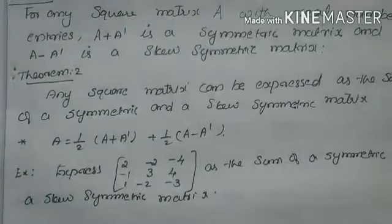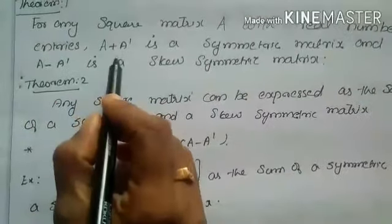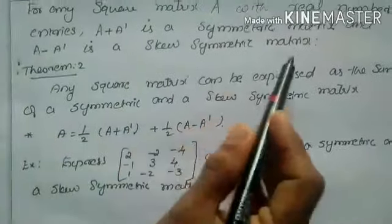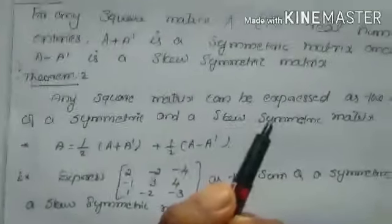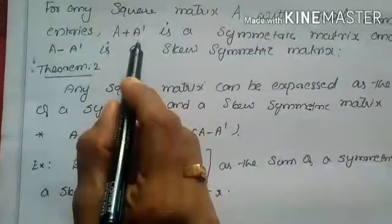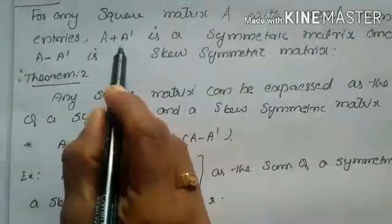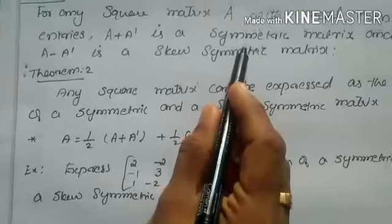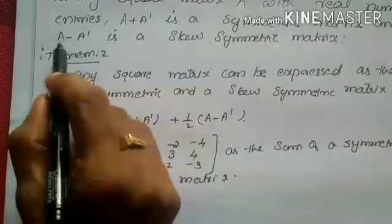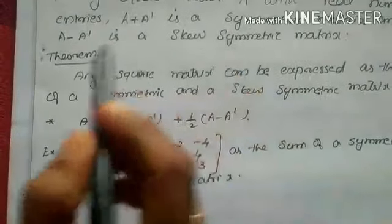Theorem 1: For any square matrix A with real number entries, A plus A dash is a symmetric matrix, and A minus A dash is a skew-symmetric matrix. If you take matrix A and its transpose and add them, the resultant matrix is symmetric. If you take A minus A dash, you get a skew-symmetric matrix.